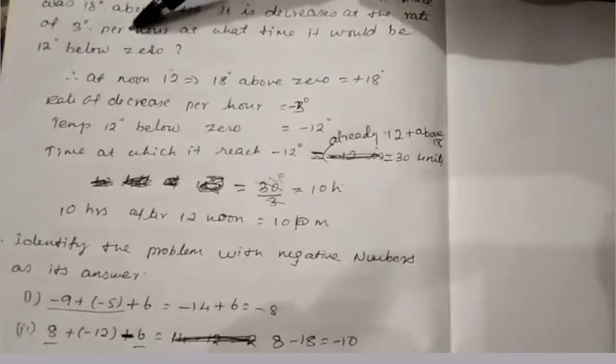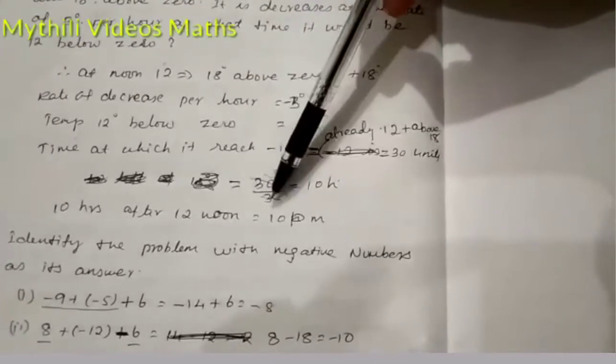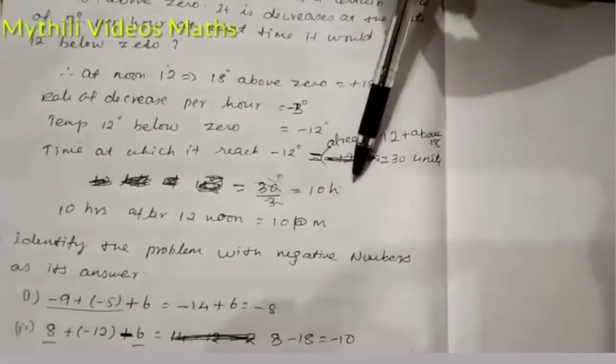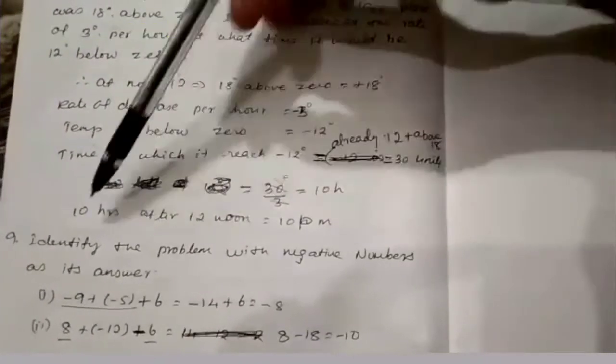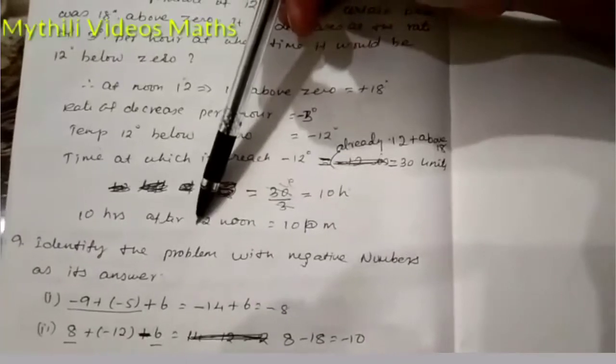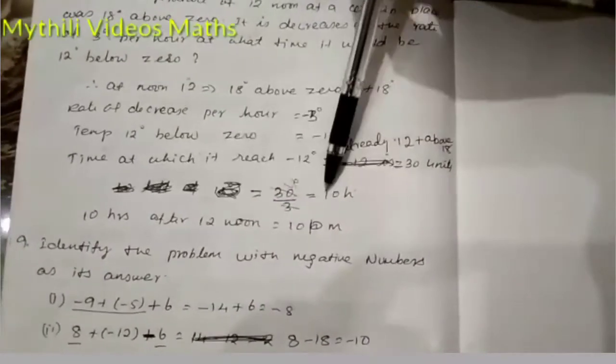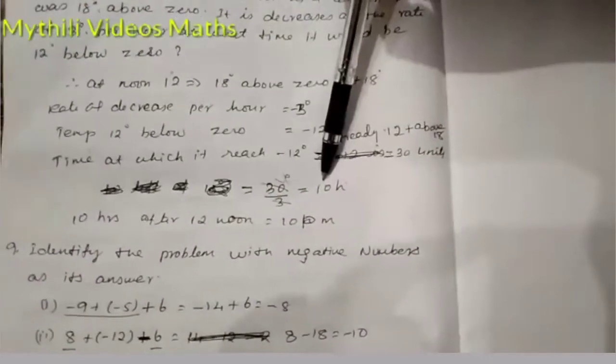3 hours. So 30 divided by 3 equals 10 hours. So 10 hours after 12 noon, that means we have to add. It's already 12 noon, and we got 10 hours, so that is 12 + 10 equals